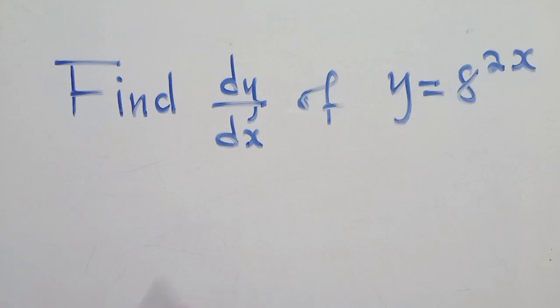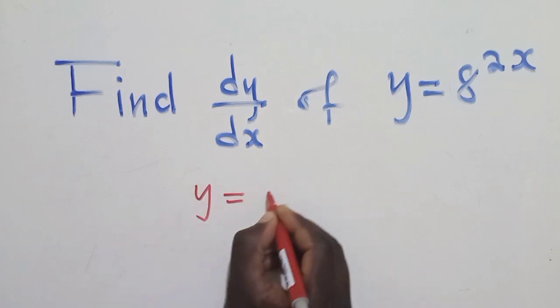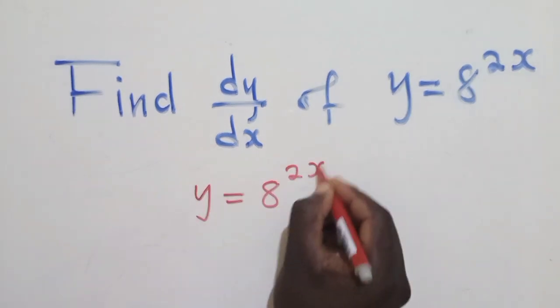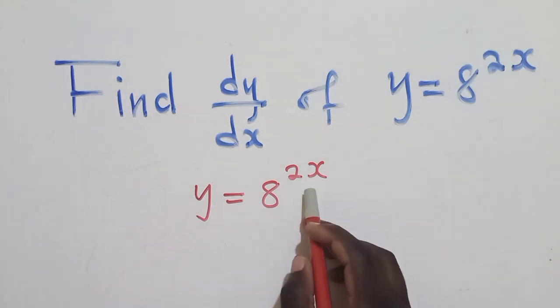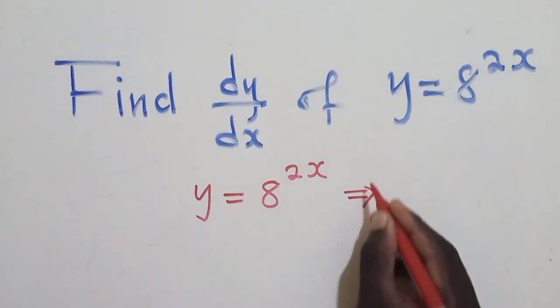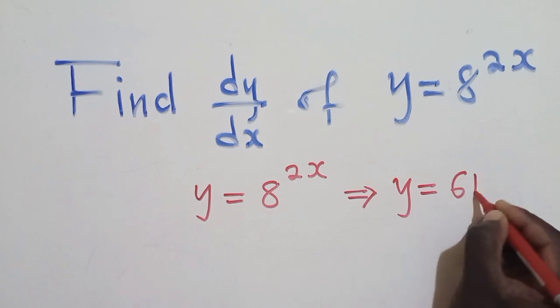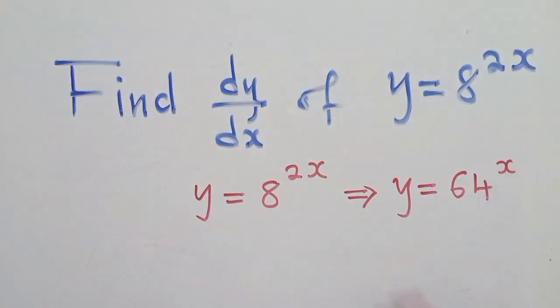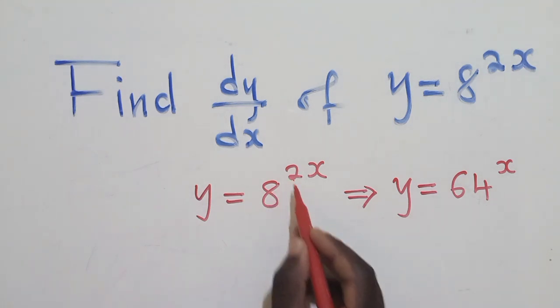Now, to find the derivative, because we know that dy/dx is the derivative, we first need to copy what we have. And this is what we have right here. Now, look at the power that we have. Using the laws of indices, we can simplify all this stuff. We have y equals 64 power x. So what is here is the same as this. 8 power 2 is 64.